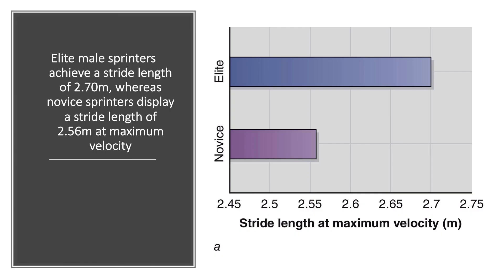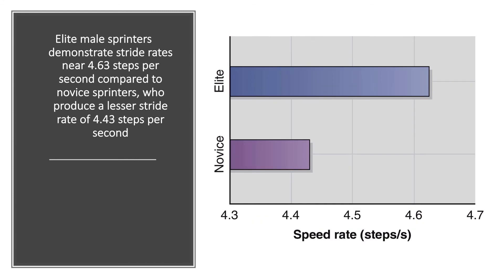Similar to a cheetah, elite sprinters have long stride lengths. As shown in this figure, there is a clear difference in stride length at maximal velocity between an elite versus a novice sprinter. Similarly, elite sprinters have increased stride rates as well, as demonstrated in the next figure comparing stride rate between an elite sprinter and a novice sprinter — the elite sprinters have a higher stride rate.